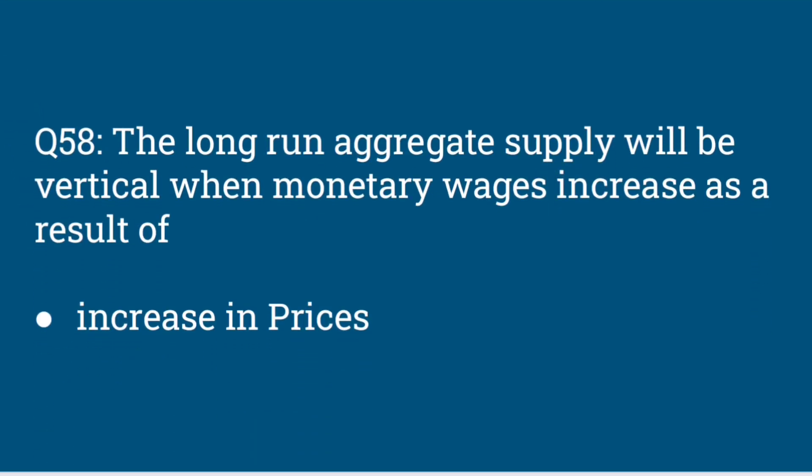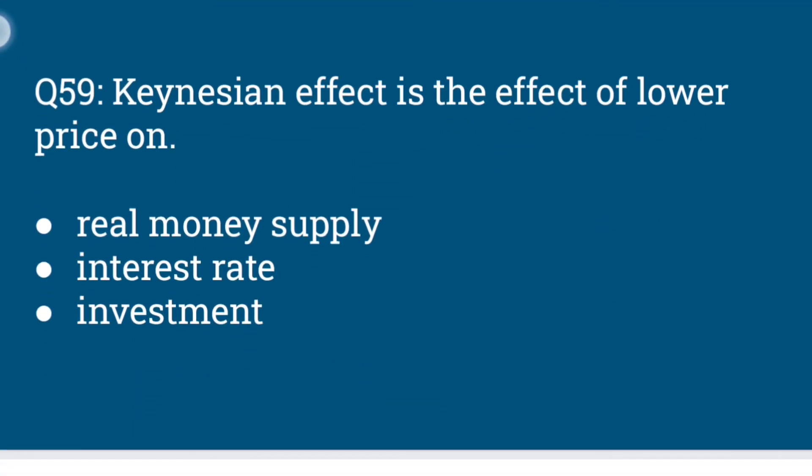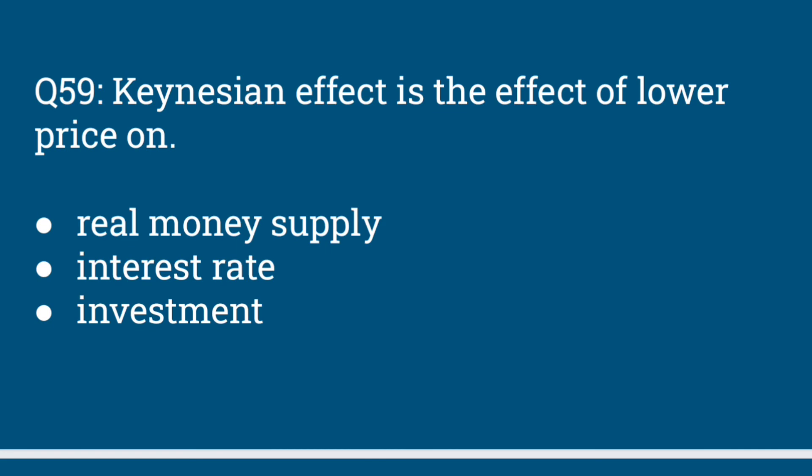The long-run aggregate supply curve will be vertical when monetary wages increase as a result of increases in prices. The Keynesian effect is the effect of lower prices on real money supply, interest rate, and investment.